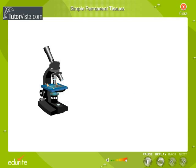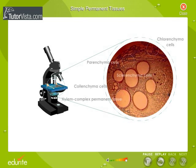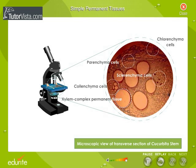You can see on screen a magnified version of the transverse section. The simple and complex permanent tissues are seen clearly.